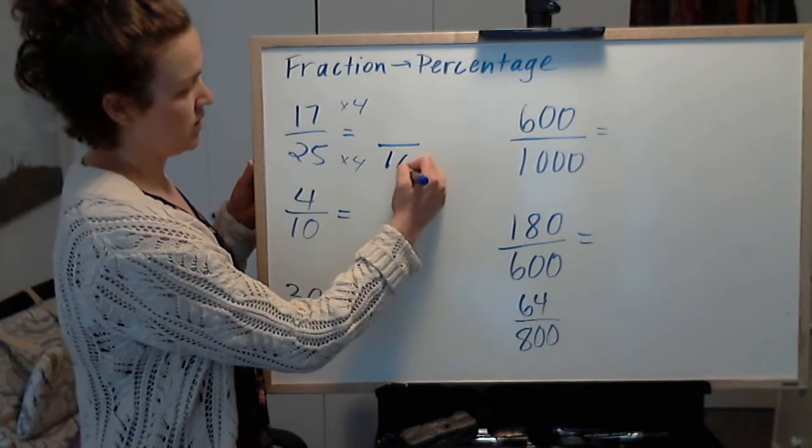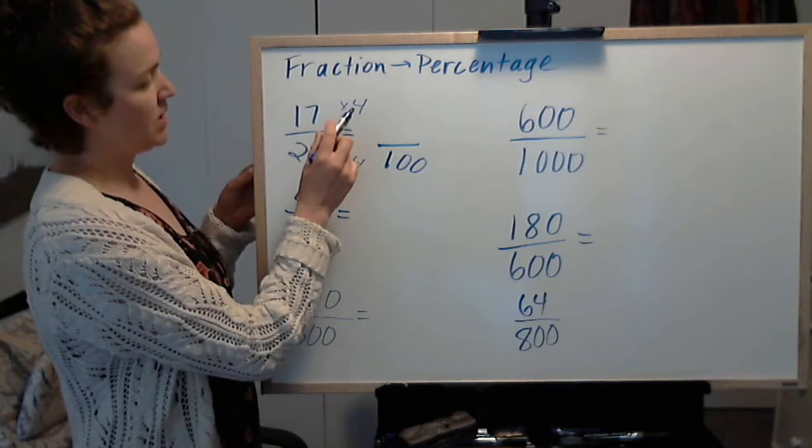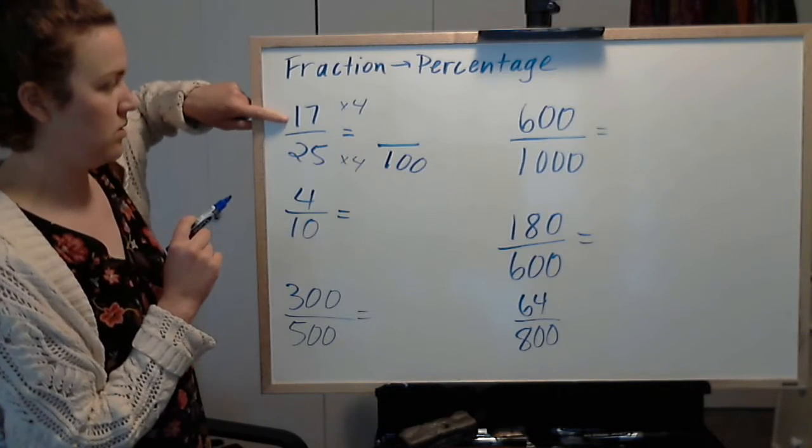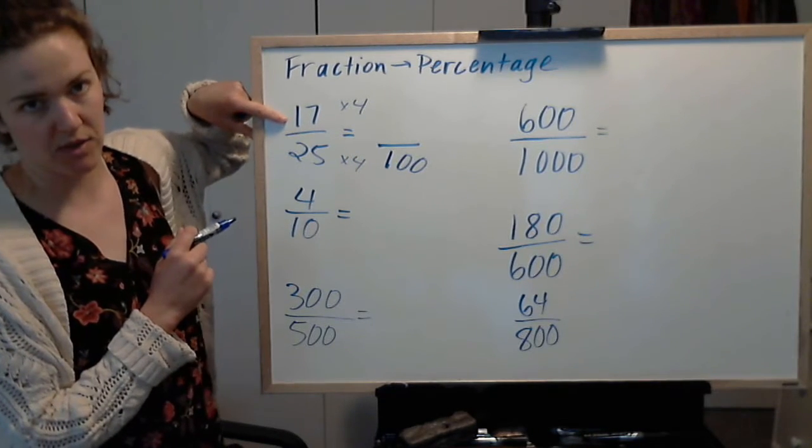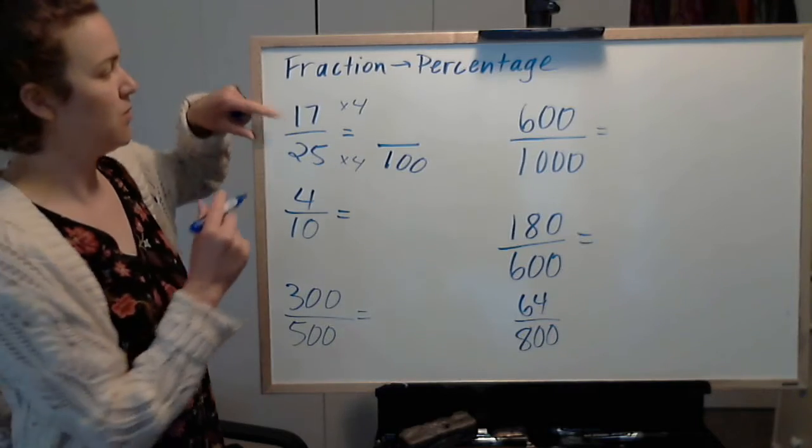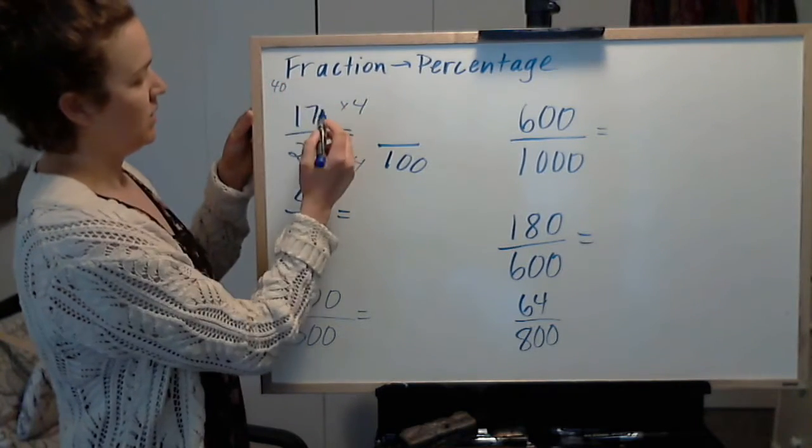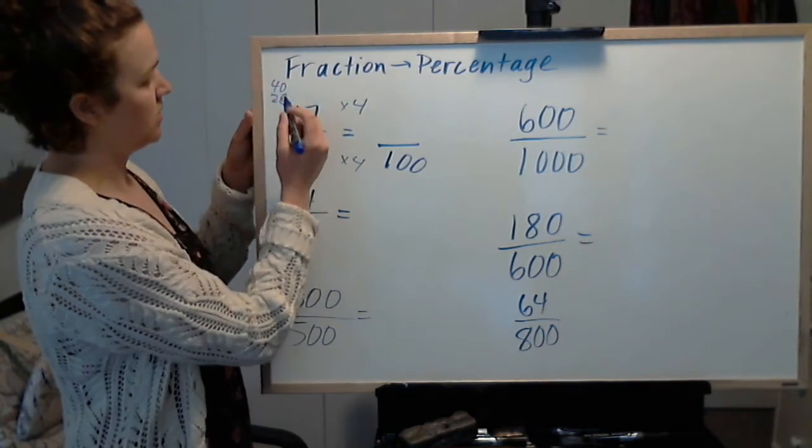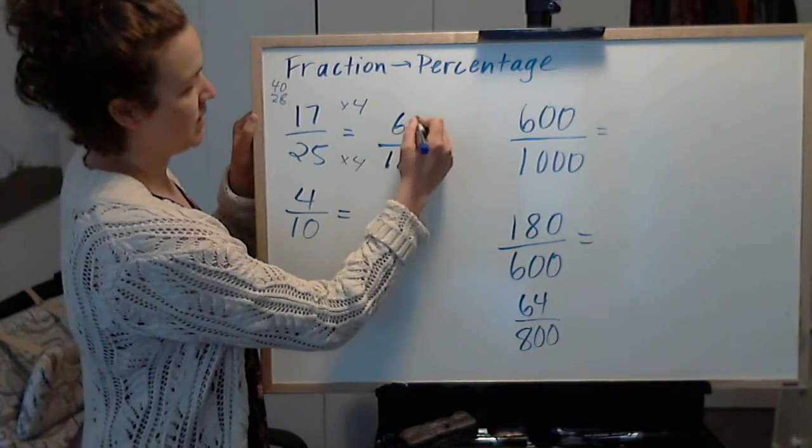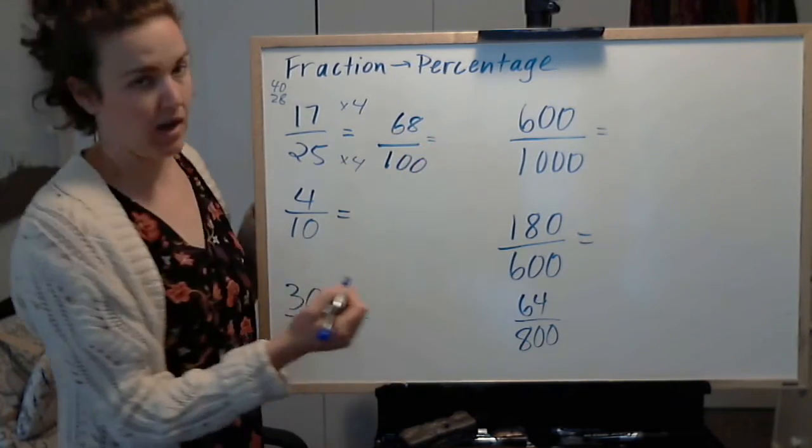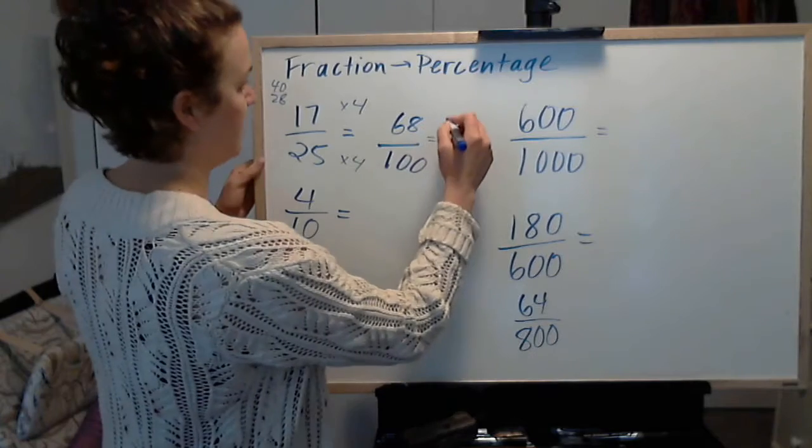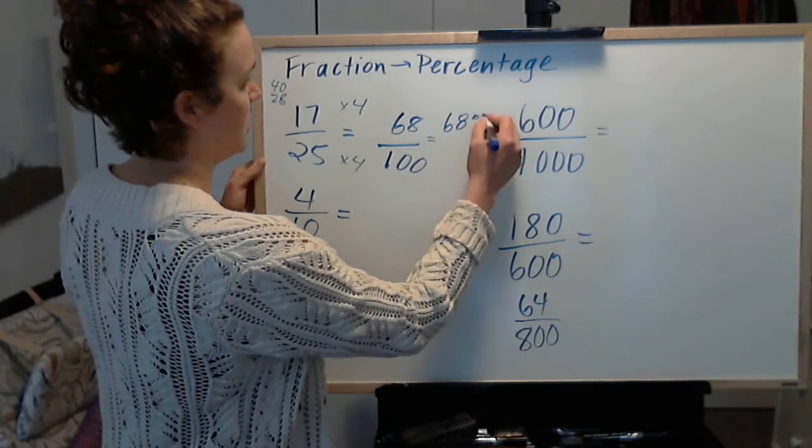25 times 4 is 100. 17 times 4, I'm going to do 10 times 4 and then add 7 times 4. 10 times 4 is 40. 7 times 4 is 28. So 68 out of 100. And then we have to write it as a percent: 68%.